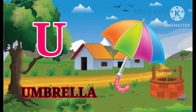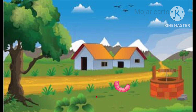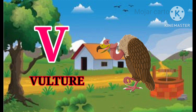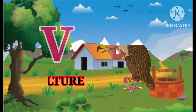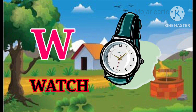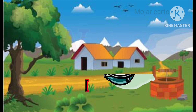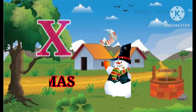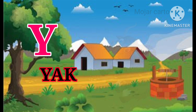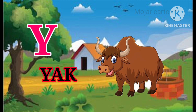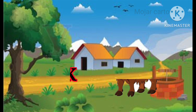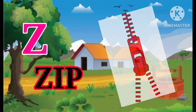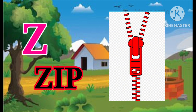U for Umbrella, V for Vulture, W for Watch, X for Xmas, Y for Yak, Z for Jeep, Pigeon!